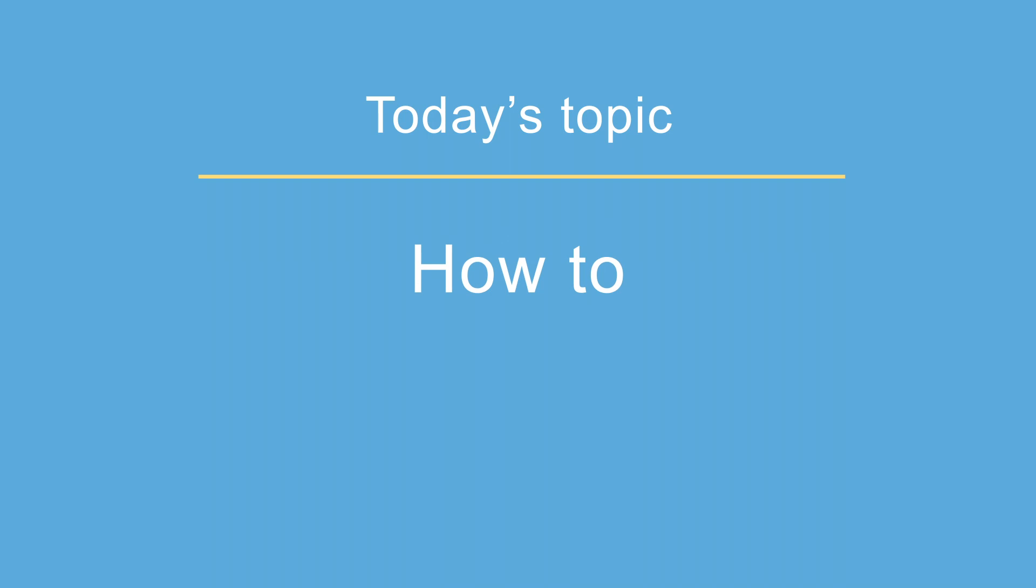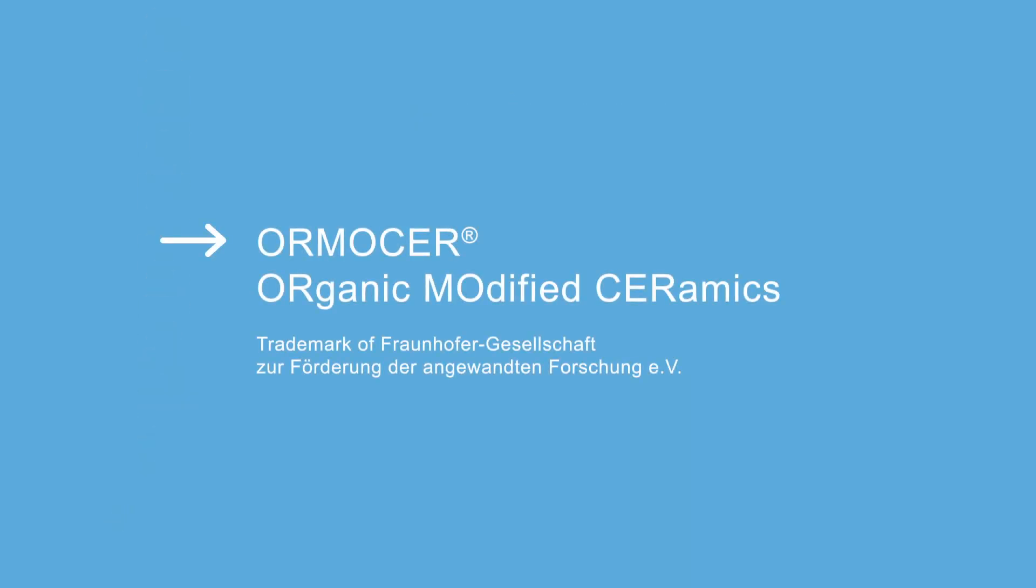Welcome to this tutorial on how to remove the Ormiser coating. Ormiser is short for Organic Modified Ceramics and is composed of silicones, organic polymers, and ceramics.